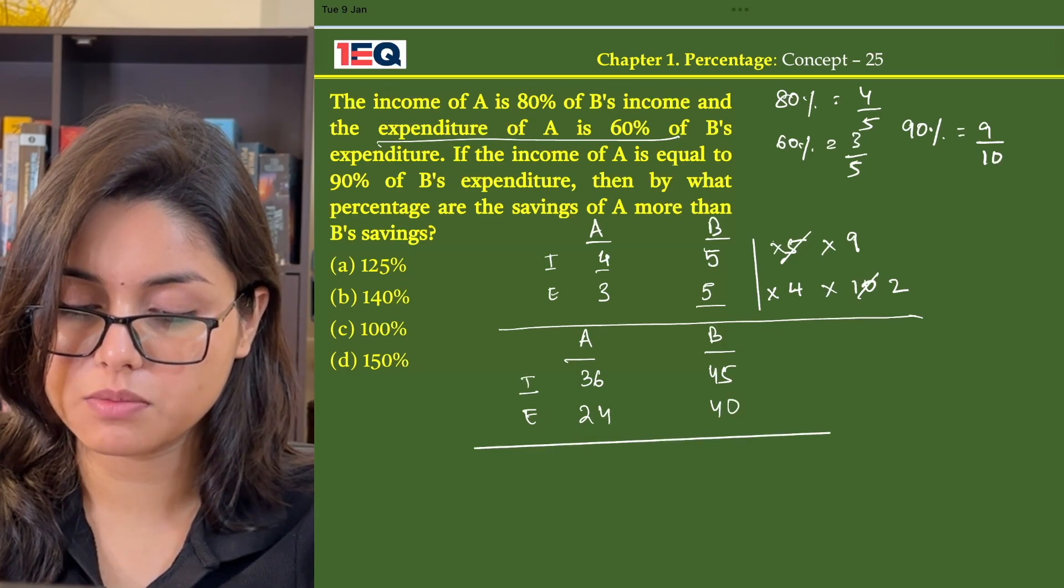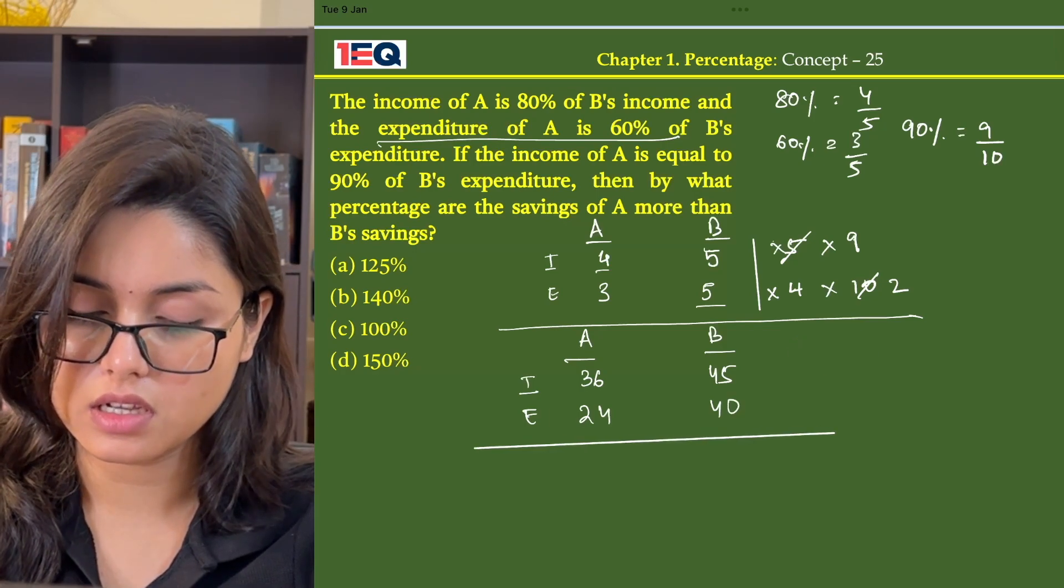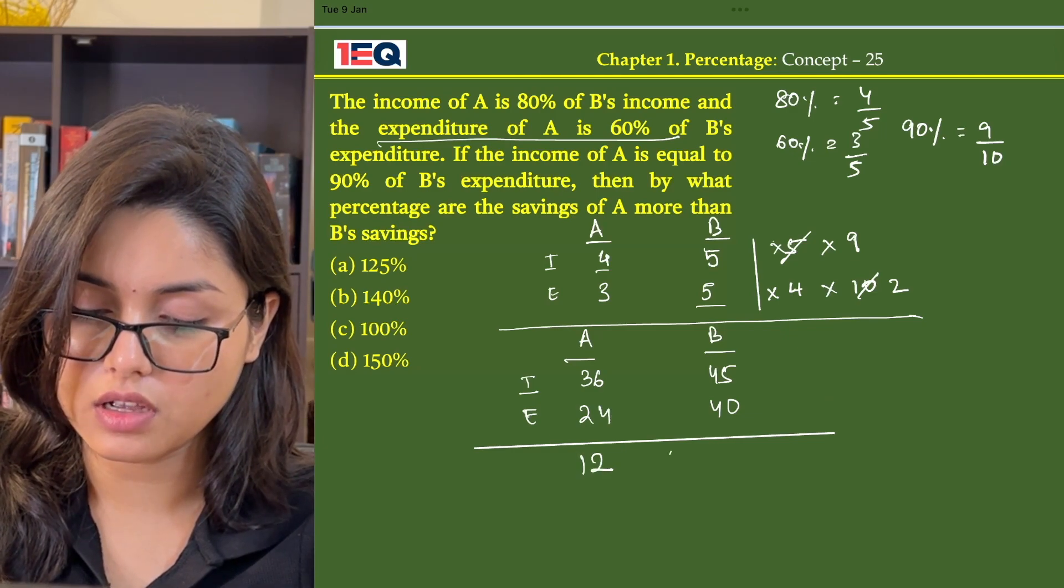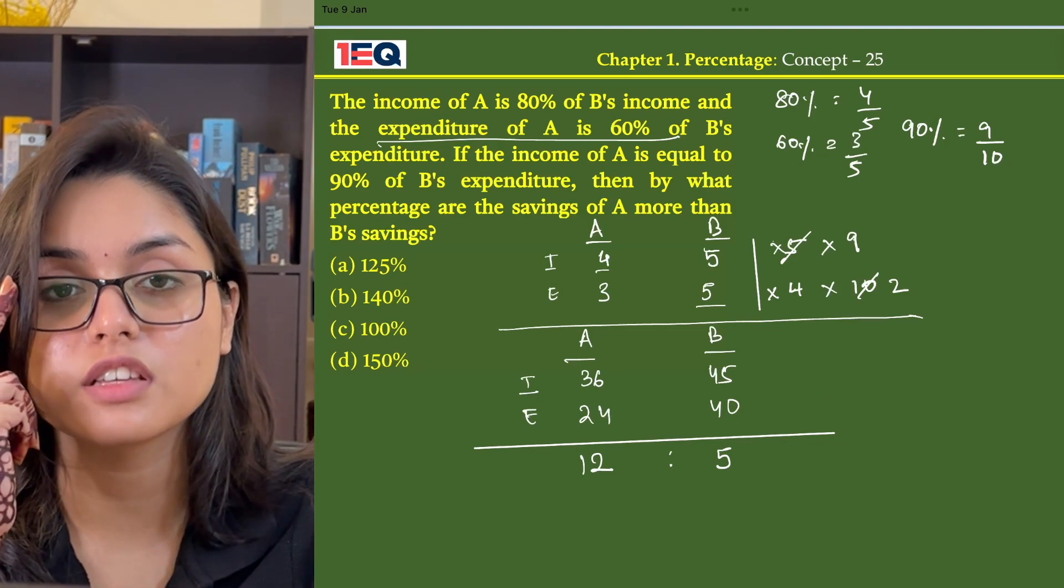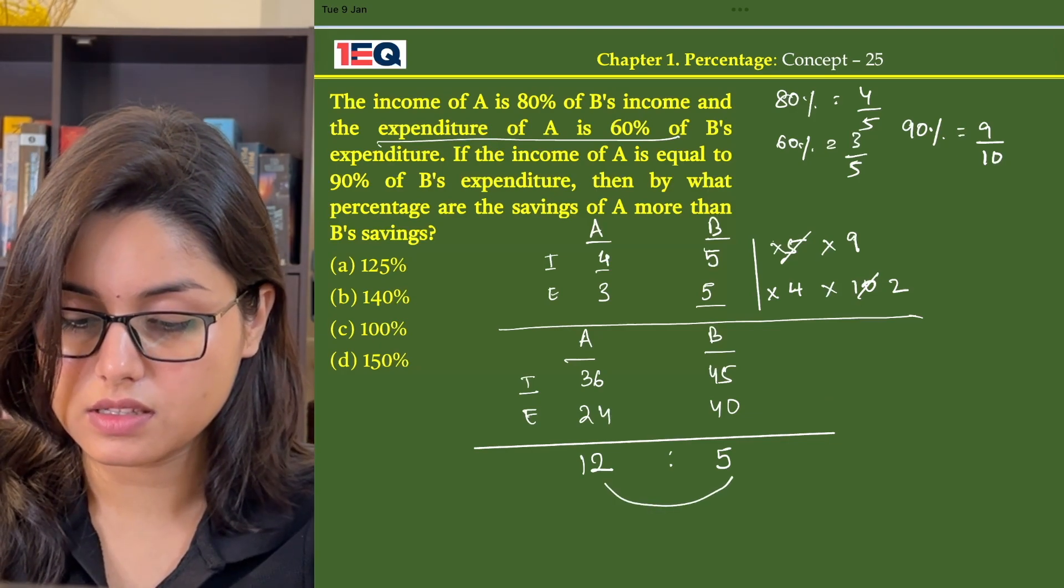How much did both of them save? A saved 12, whereas B saved 5. How much did A save more? A saved 7 more.